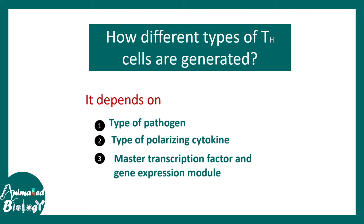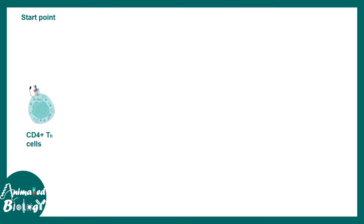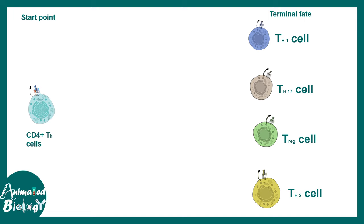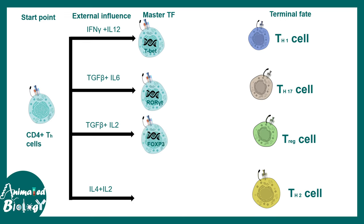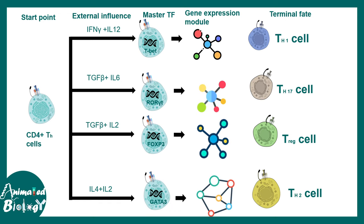Starting from a CD4-positive T helper cell, external interleukin combinations drive lineage commitment. IL12 and interferon gamma trigger the transcription factor T-bet, leading to TH1 differentiation. TGF-beta plus IL6, or TGF-beta plus IL2, activate different master transcription factors leading to other lineages like TH17 or T regulatory cells, ultimately giving rise to distinct terminal cell states.